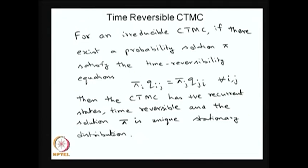The usage of this concept is: whenever a CTMC is irreducible and satisfies the time reversibility equation of this form, then you do not need to solve πQ = 0 and the summation condition to get the stationary distribution. Instead, use the time reversibility equation recursively to express all unknowns in terms of one — either π_0 or π_1 — then use the normalization condition summation of π = 1 to find that unknown.